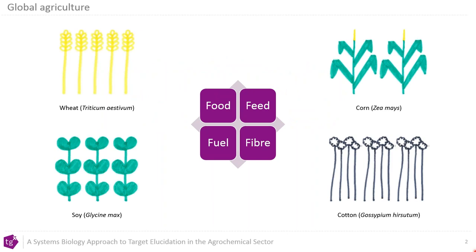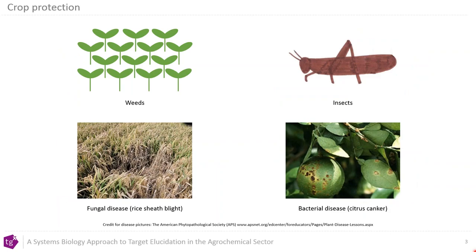The global population stands at 7.7 billion people and is set to rise to 9.7 billion by 2050. Clearly there is a need to increase productivity of the fertile land devoted to agriculture, which is required to produce four categories of crops for food, feed, fibre, and fuel.